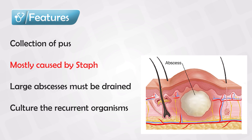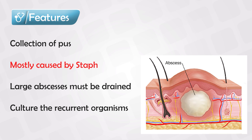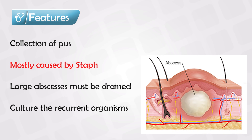To summarize, abscesses are a collection of pus, mainly caused by Staphylococcus aureus. This can be in the skin or in the deep organs. If it's deep, it's most likely going to cause fever and chills. It often spontaneously resolves, but if it doesn't, you may have to use antibiotics, incision and drainage, or both.